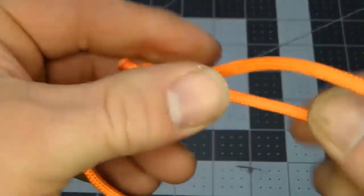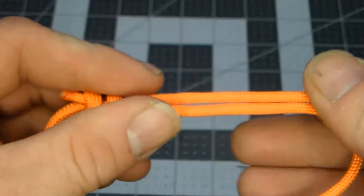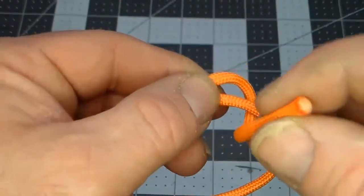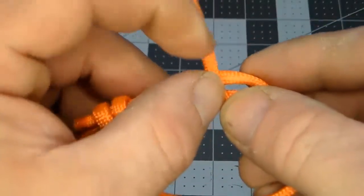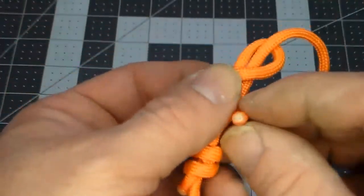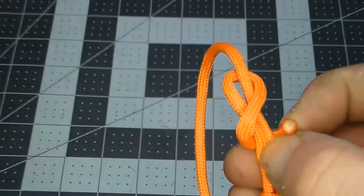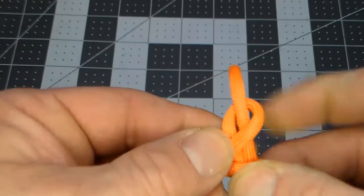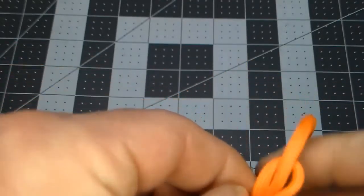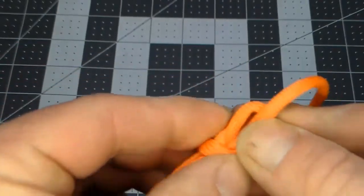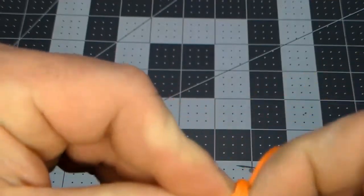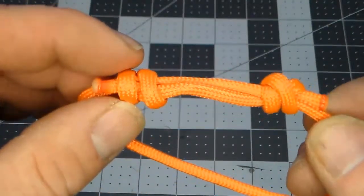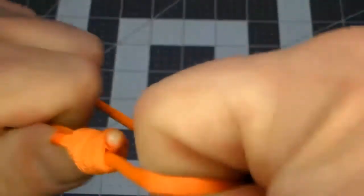As you can see, we got the knot formed there. Go ahead and dress that up. Then we do the same thing on this side: under, over, under, and around. There we have our figure eight, and we work this end through the X. It can be really challenging with a small amount of line. There we got our double fisherman's knot, and we pull that tight. And there's our prusik loop.